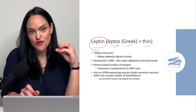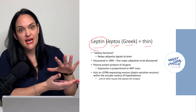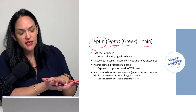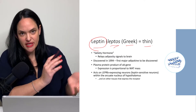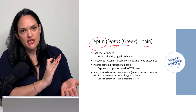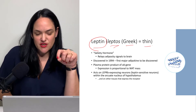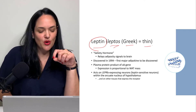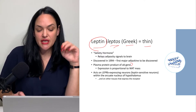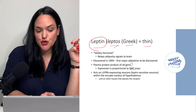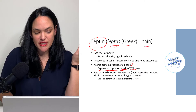Leptos is Greek for thin, because having that satiety factor and its reception working properly is responsible for making sure that obesity doesn't develop and that hyperphagia isn't promoted. So leptin is a satiety hormone and is the plasma product of the OB gene. It is secreted by white adipose tissue, and the more white adipose tissue there is, the more leptin that is being secreted.